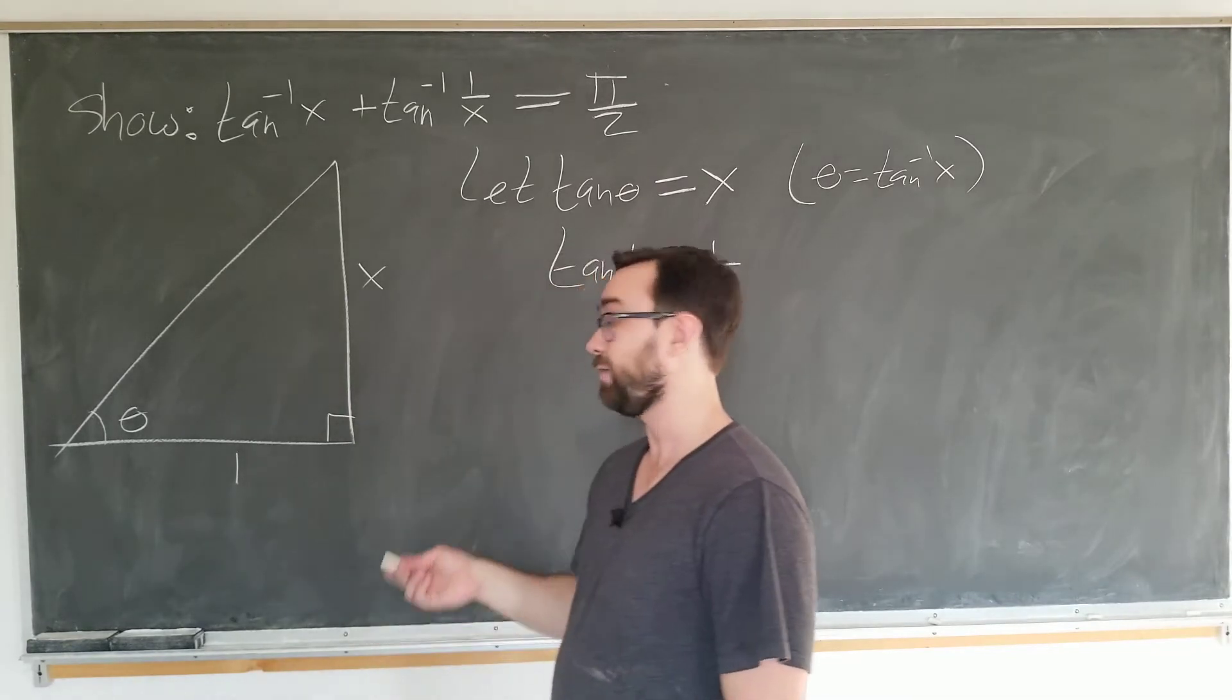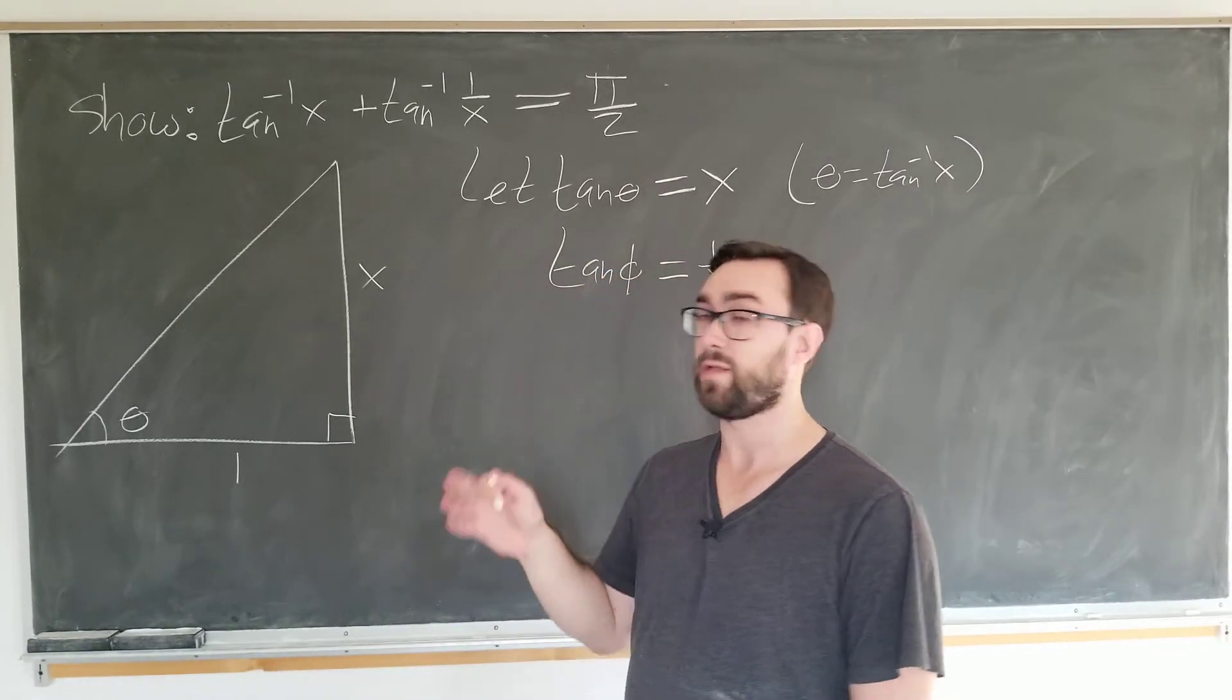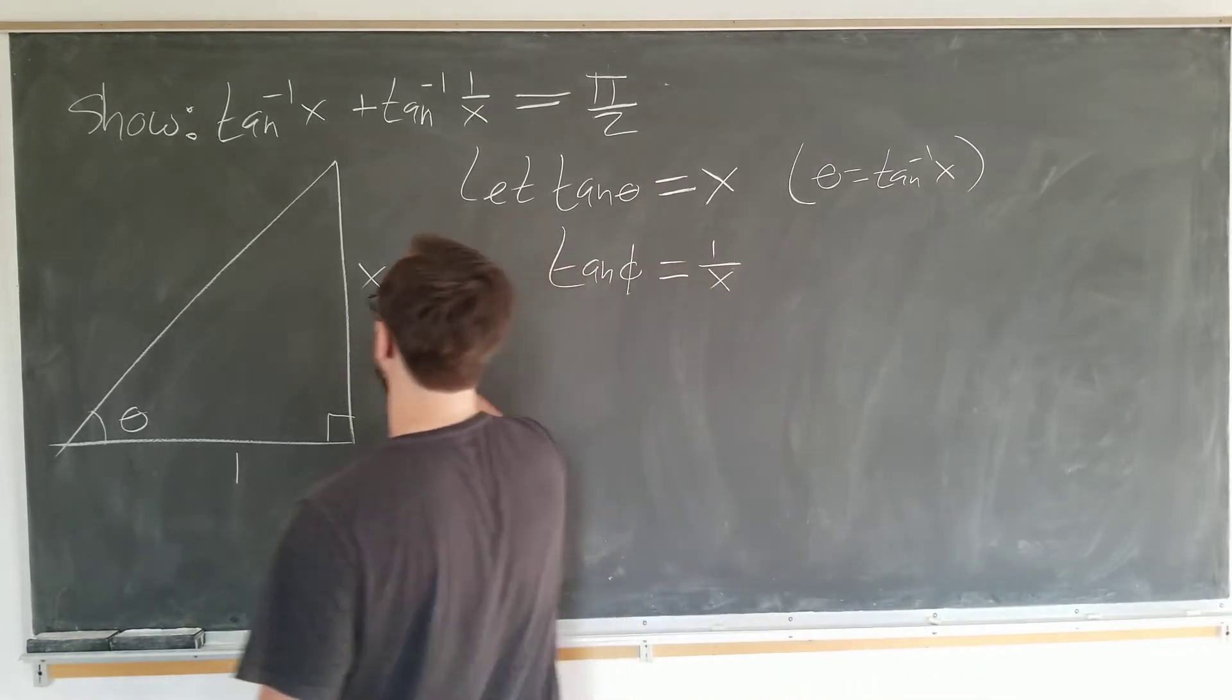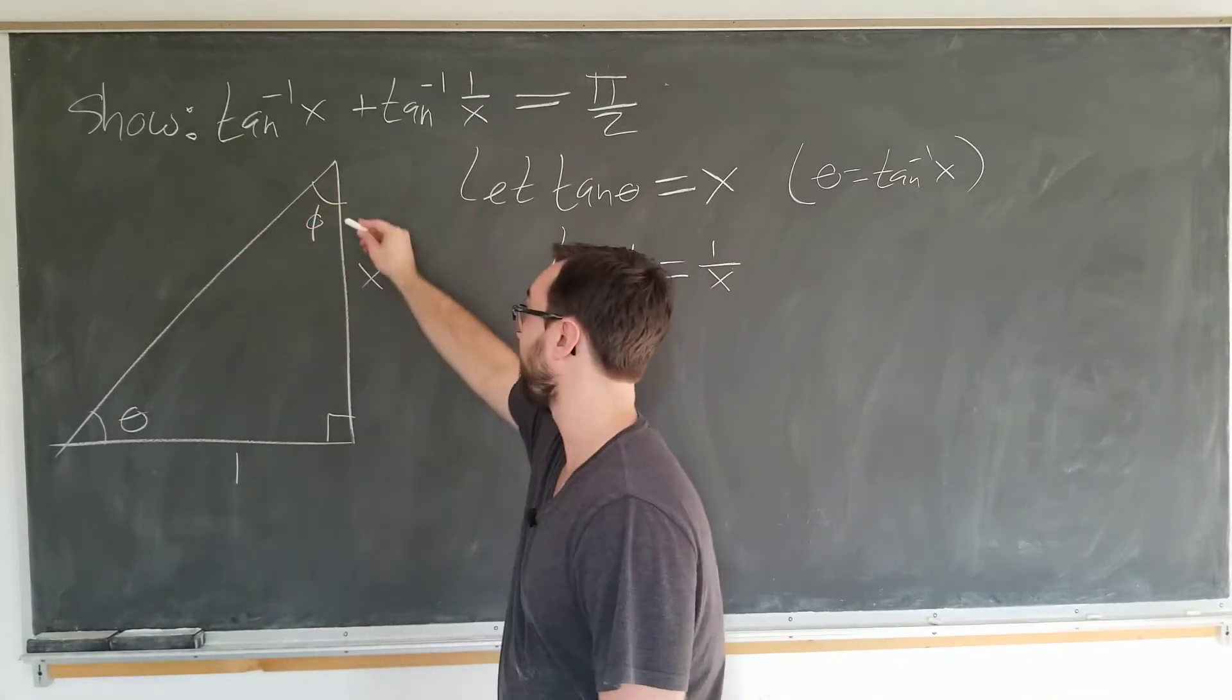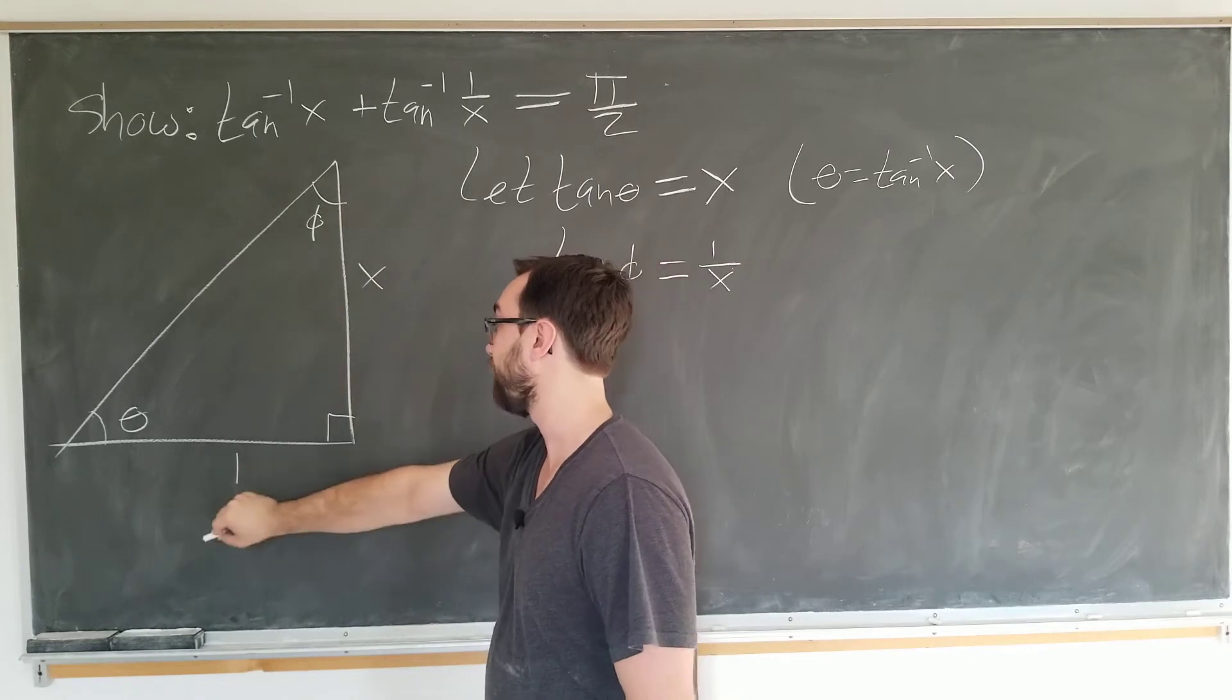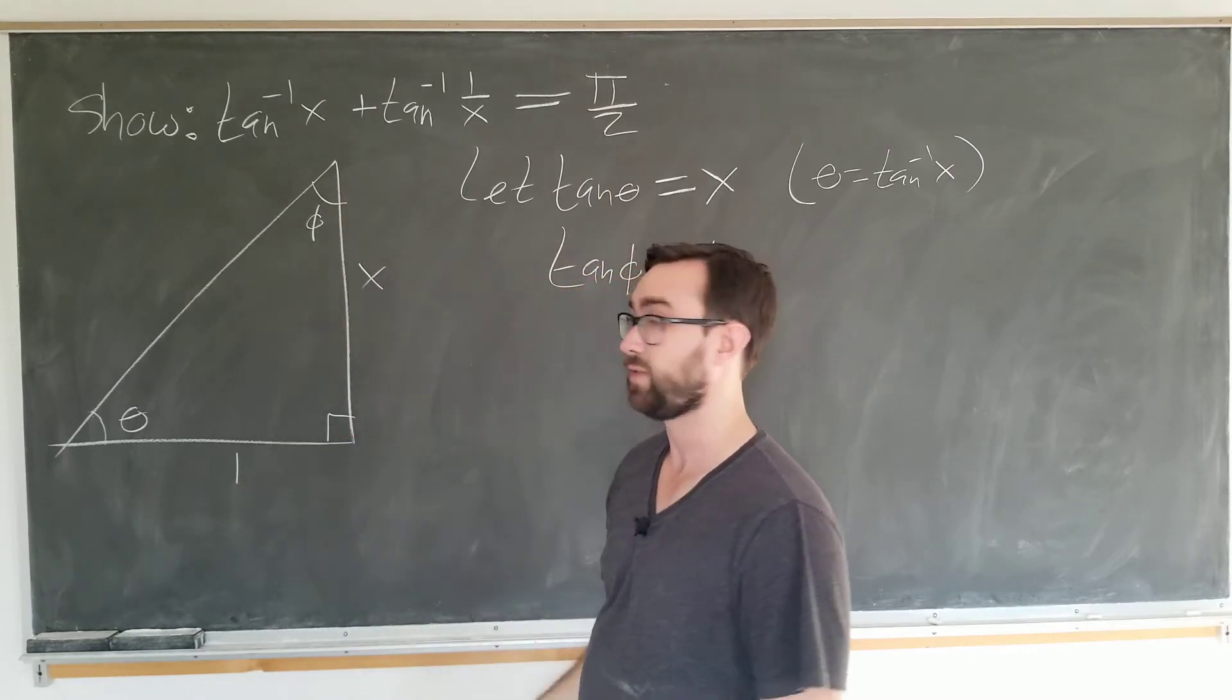Well, there's only one other angle left in the triangle. So it has to be here, phi. And you can see if we take the tangent of this angle now, it's going to be the opposite over the adjacent. So it is 1 over x.